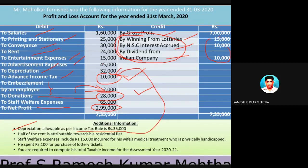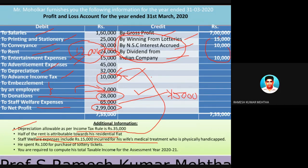For adjustments: depreciation allowed under Income Tax Act is thirty-five thousand but only thirty-two thousand was claimed — three thousand should be deducted from profit. Half of the rent of twenty-four thousand is attributable to residential flat, making twelve thousand a personal expenditure that should be added back. Staff welfare expenses include fifteen thousand for wife's medical treatment — this is personal expenditure and should be added back. Rupees one hundred for purchase of lottery ticket is also personal expenditure and should be added back.